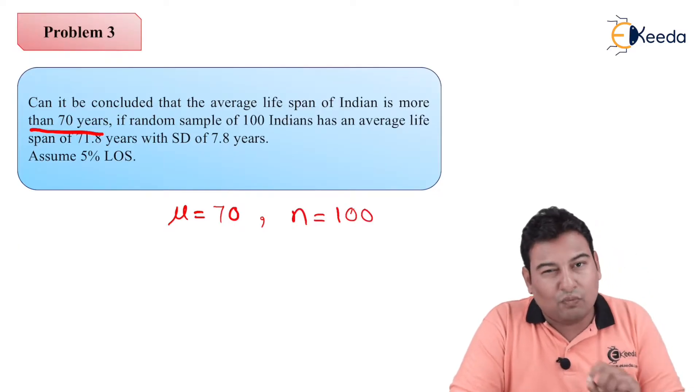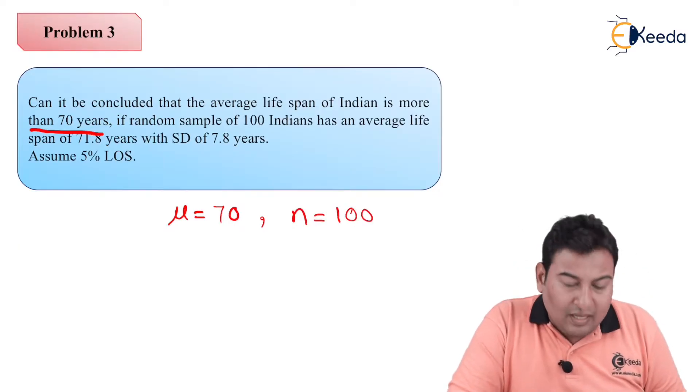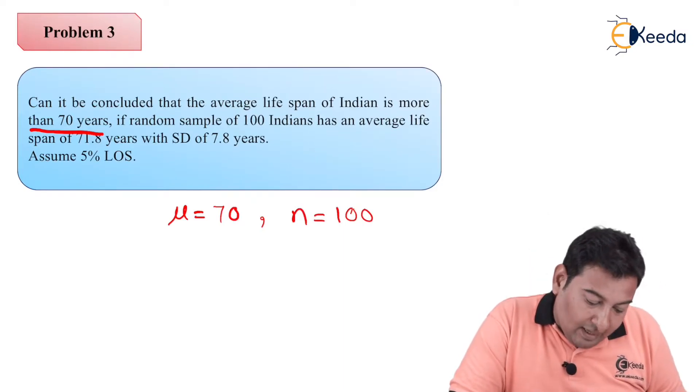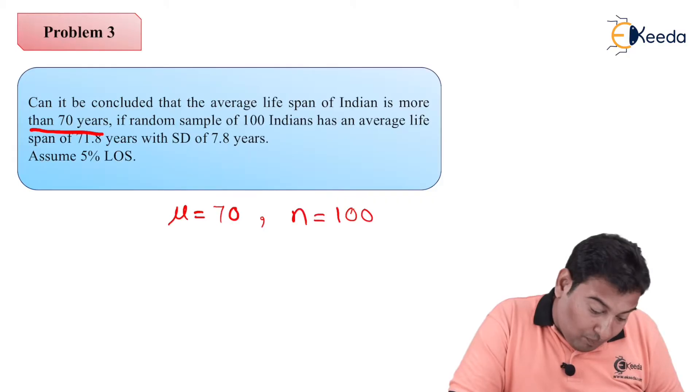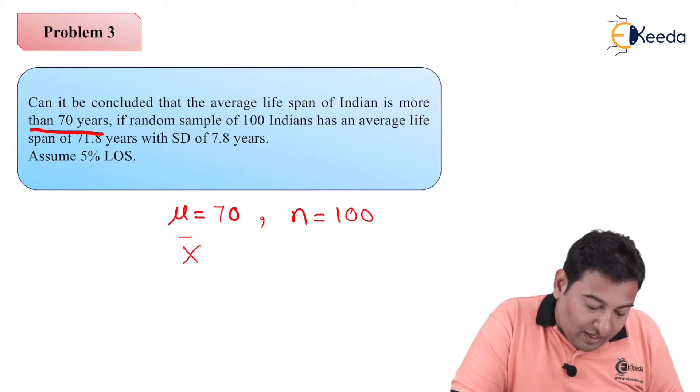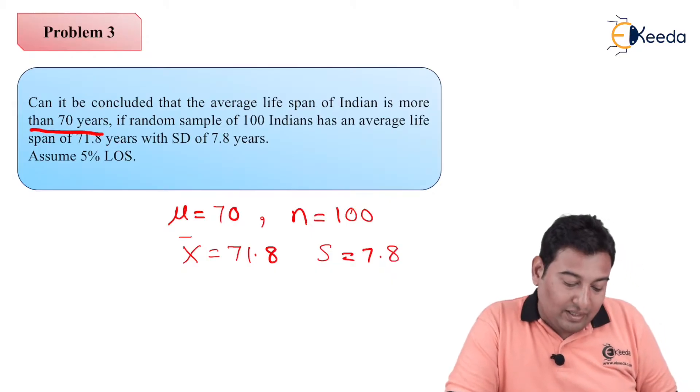This is our third problem, so we'll go a bit faster. Here n is equal to 100, obviously greater than 30. That means large sample test has an average lifespan of 71.8 years. That means this is sample mean. So x̄ is equal to 71.8 with standard deviation, that is S is equal to 7.8 years.